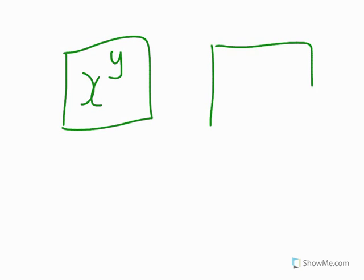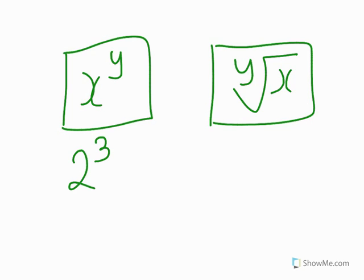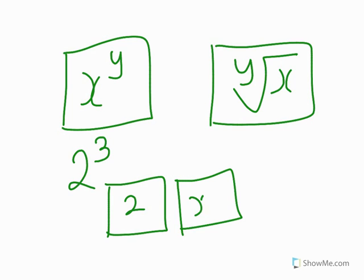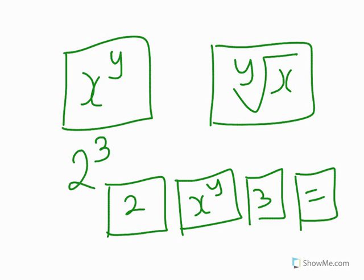So if you are now looking at it, you see the buttons — you have x raised to power y, and you also have the y-root of x. x raised to power y means you can raise anything to any exponent. For instance, if we want to do 2 cubed, we know it's 2 times 2 times 2. What we do is press 2, then press the x raised to power y button, then press 3, and then press equal — that gives you 8. You also see another button that says x cubed, so if you want to find 2 cubed, you press 2 and press x cubed and it gives you 8.